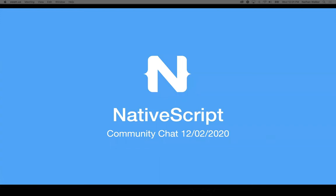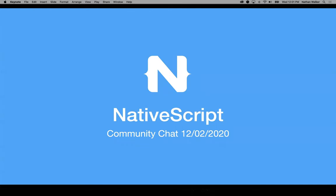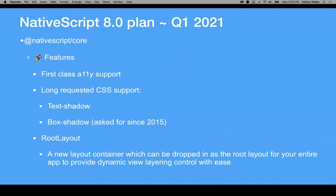Welcome everyone to Community Chat for December 2nd. We are really excited about this call because this is the first time we are going to share in a bit more detail the NativeScript 8.0 plan. This is a high level look at the main highlights for NativeScript 8.0, which has been planned and is currently shooting for Q1 of 2021 — that's the January to March timeframe.